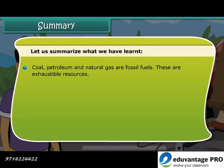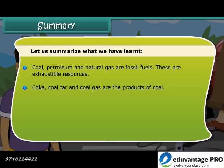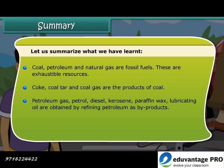Coal, petroleum and natural gas are known as fossil fuels and are exhaustible resources. Coke, coal tar and coal gas are all products of coal. Petroleum yields petroleum gas, petrol, diesel, kerosene, paraffin wax and lubricating oil through the refining process.